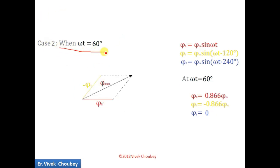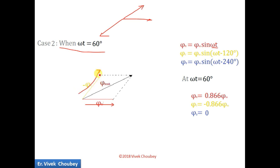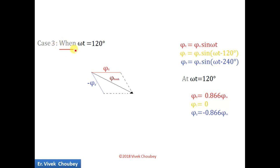Now at ωt = 60°: φR = 0.866φm, which is positive. φY is again negative — since φY was pointing in its reference direction, minus φY points opposite, so φY is in that direction. φB = 0, so it does not appear. When we take the vector addition of φR and φY, the resultant magnetic field is in this new direction. So this is the resultant at ωt = 60°.